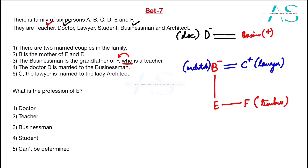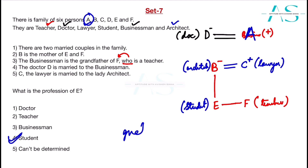With teacher, doctor, lawyer, and architect assigned, the remaining profession is student — so E is the student. The businessman is A. The profession of E is student. The gender of E is not revealed from the given information.